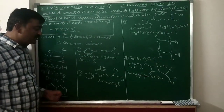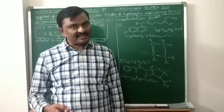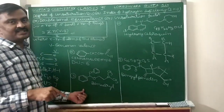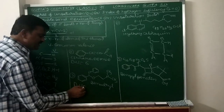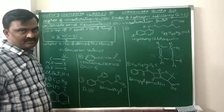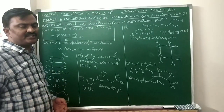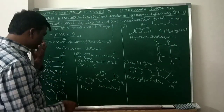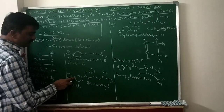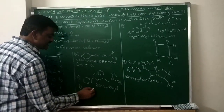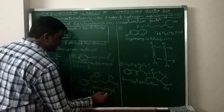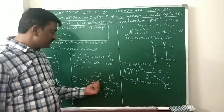Now come to the third example: Benadryl — it is the cough syrup. Structure is given, asking for degree of unsaturation. This type of question may be asked in JEE Mains, JEE Advanced, and NEET exams. How many pi bonds? 1, 2, 3 from one ring, and 1, 2, 3 from another — totally 6 pi bonds. Plus 2 rings. So degree of unsaturation of Benadryl is 8.